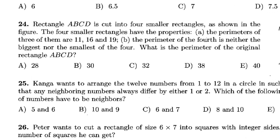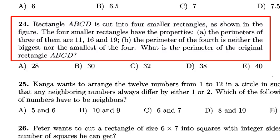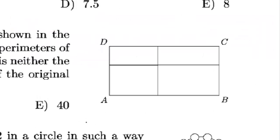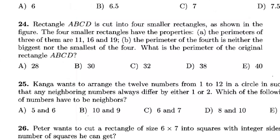Rectangle ABCD is cut into four smaller rectangles as shown in the figure. The four smaller rectangles have the following properties: the perimeters of three of them are 11, 16, and 19, and the perimeter of the fourth is neither the biggest nor the smallest of the four. What is the perimeter of the original rectangle ABCD?